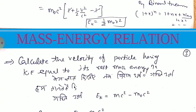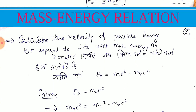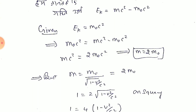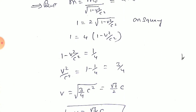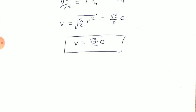Now there are two important numerical questions. First: calculate the velocity of a particle whose kinetic energy equals its rest mass energy. If kinetic energy E_k equals rest mass energy m₀c squared, and E_k equals mc squared minus m₀c squared, then setting these equal gives m equal to twice m₀. Using m equal to m₀ divided by root of 1 minus v squared over c squared and rearranging, the velocity obtained is v equal to root 3 over 2 times c.